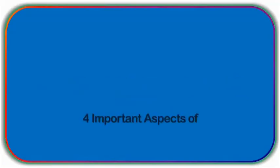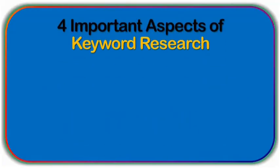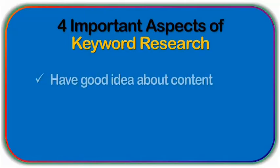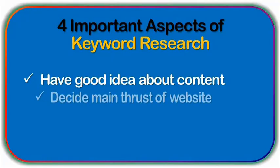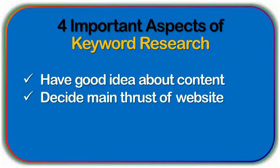There are four aspects you need to know before you start searching for your keywords. You need to have a good idea about the topic of your content. As I explained in the first lesson, knowing your knowledge, your passion and ability for long haul are the three determinants for identifying your content. You need to decide the main thrust of your website — will it be an informational destination or a place to sell products or both? The nature of keywords will vary a lot depending on this decision.